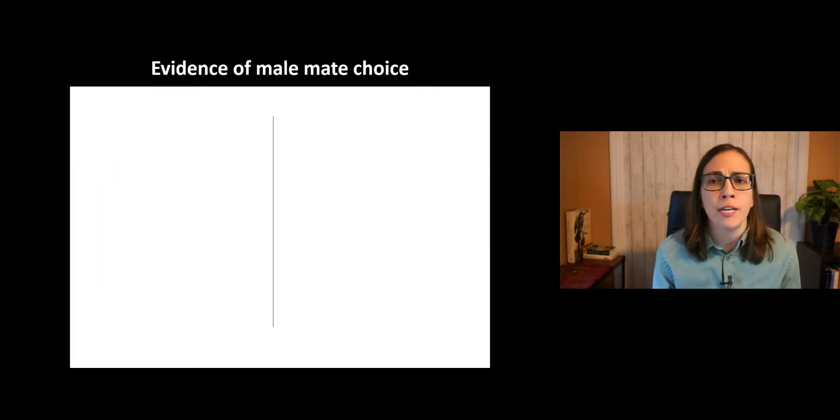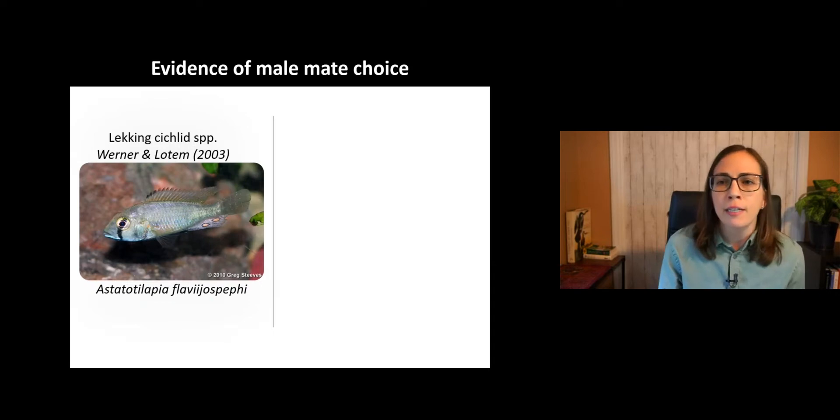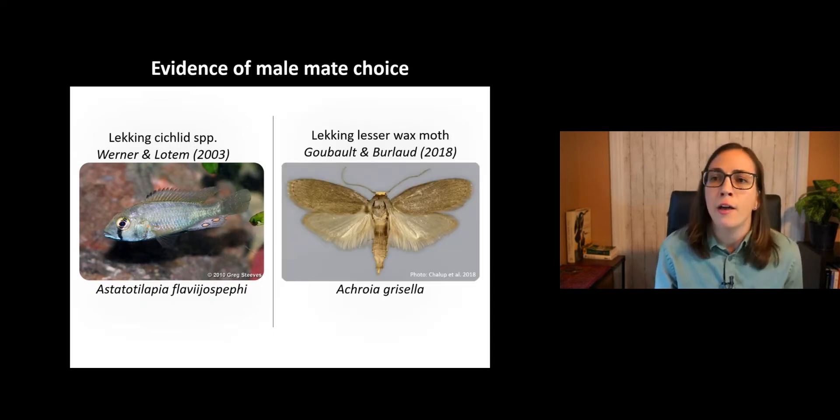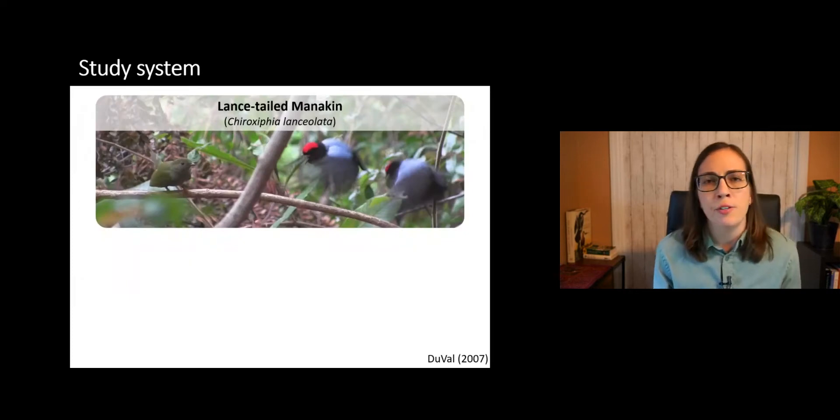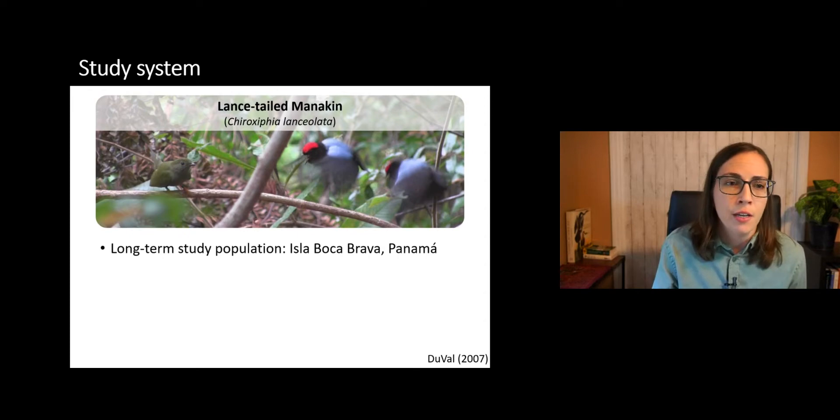Now, there have been a number of studies that have demonstrated evidence of male mate choice in lekking species, such as that in the haplochromine cichlid and the lesser wax moth. But despite the current evidence, male mate choice is still an understudied topic that may be an underestimated force in sexual selection. So in this study, we were interested in determining if male mate choice occurs in the lance-tailed manakin.